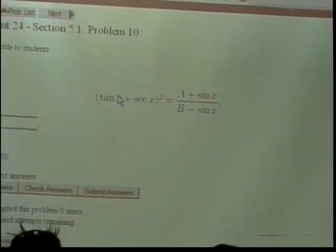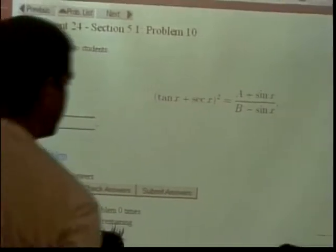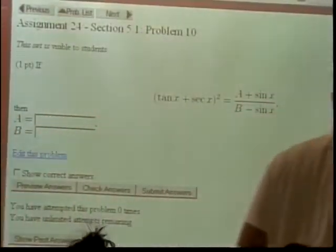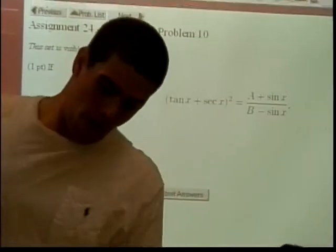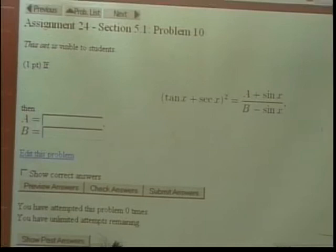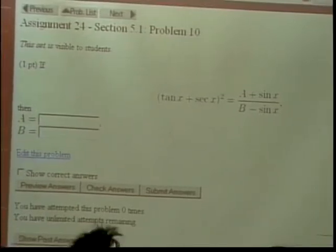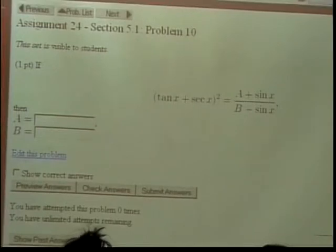Number 10, we have, obviously we're going to have to mess with the left side of this, because the right side is just nothing we can deal with. So we have tangent of x plus secant of x squared, and we want it to end up looking like this. Suggestions?